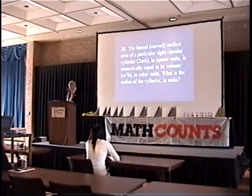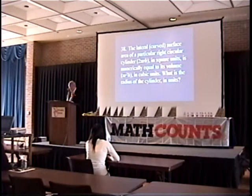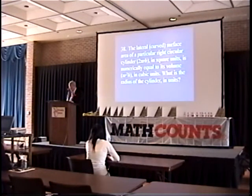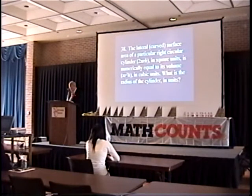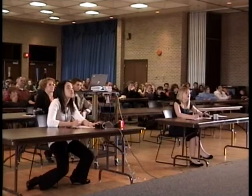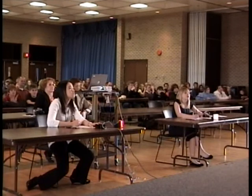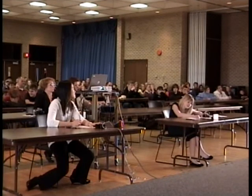The curved surface area of a particular right circular cylinder, 2πrh in square units, is numerically equal to its volume πr²h in cubic units. What is r? 2. 2 is the correct answer.